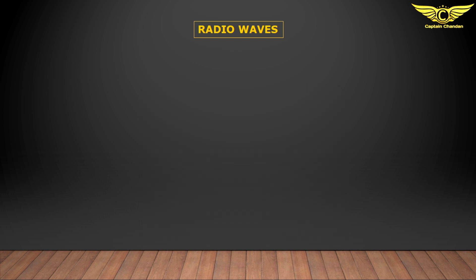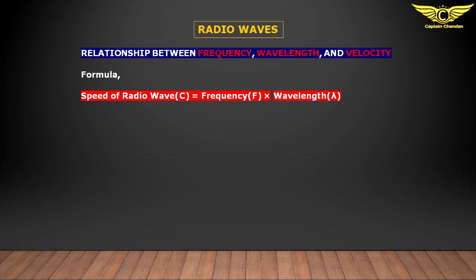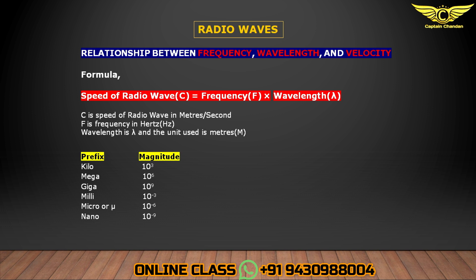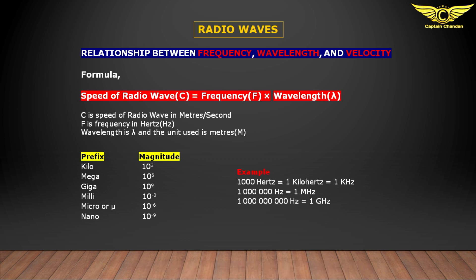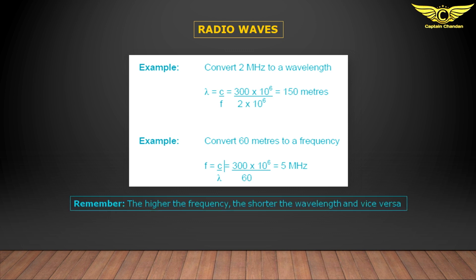Relation between frequency, wavelength, and velocity. The formula is: speed of radio wave (C) equals frequency (F) times wavelength (λ). C is the speed of the radio wave in meters per second, F is frequency in hertz, and λ (lambda) is wavelength in meters. Remember the units: kilo, mega, giga — used in frequency. Example: 1000 Hz equals 1 kilohertz (1 kHz). These numerical types are important for the DGCA exam. Remember: the higher the frequency, the shorter the wavelength, and vice versa — because the speed of the wave is constant.